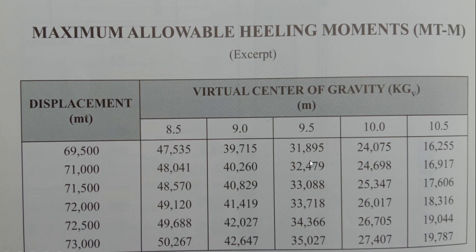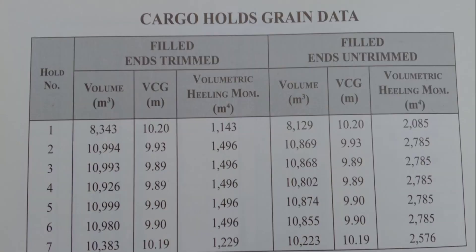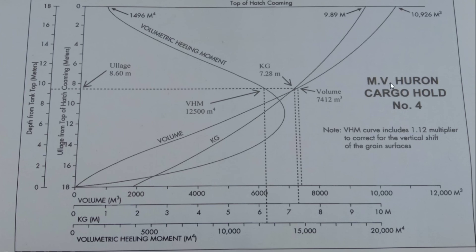Once you have the kg and compare your total volumetric heeling moment to the allowable heeling moment, and your total is less than the allowable, then you are fine. You can also carry out calculations for the grain heeling or the angle of heel using data from the maximum allowable table. There is a formula for that in the NCB booklet. This is a quick presentation of the relationship between maximum allowable moments and your total volumetric heeling moment, including the partly filled compartment I already explained.